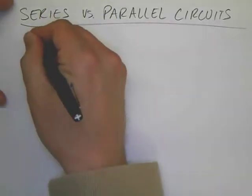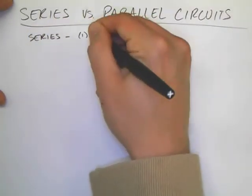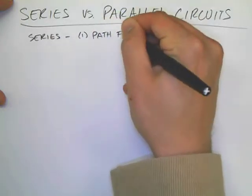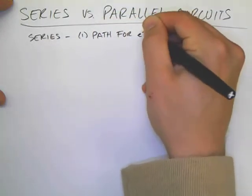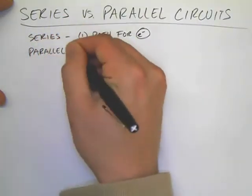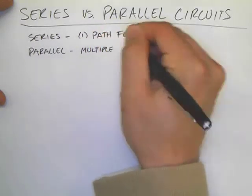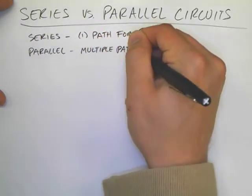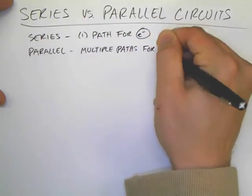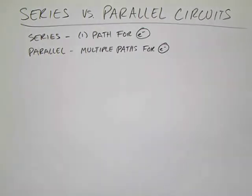So let's start with our basic definition. Series: one path for our little electrons to flow through the circuit. Parallel connection provides multiple paths for our little buddy electrons. Could be two paths, could be up to twenty. It doesn't matter. Parallel in general just means more than one path for the electrons.